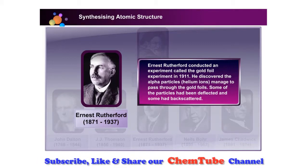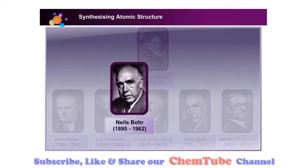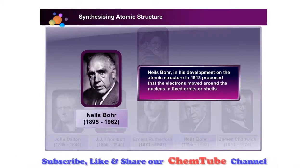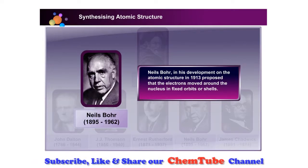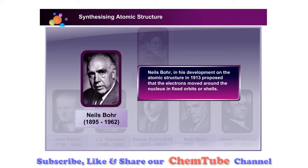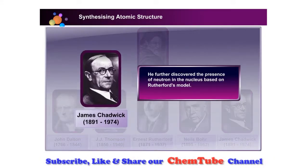Rutherford discovered that alpha particles, or helium ions, managed to pass through the gold foils. Some of the particles had been deflected and some had back-scattered. Niels Bohr, in his development on the atomic structure in 1913, proposed that the electrons moved around the nucleus in fixed orbits or shells.